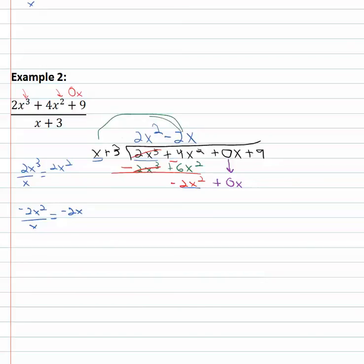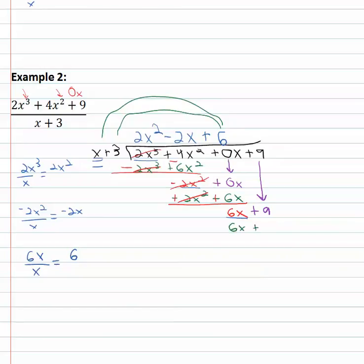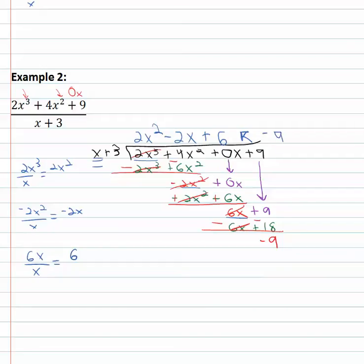We distribute again, giving us negative two x squared minus six x. Being careful with the signs, we change the signs before combining terms: the two x squared terms subtract out to zero and we're left with positive six x. We bring down the next term, the plus nine. Dividing one more time: six x divided by x leaves us with six. We distribute the six by x and by three, giving us six x plus eighteen. Changing the sign on both terms, the six x terms go to zero and we end up with negative nine. With nothing left to bring down, negative nine is our remainder.